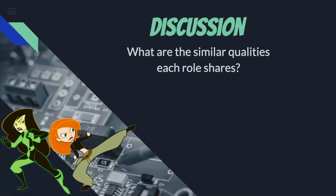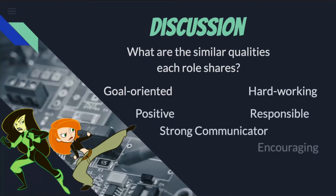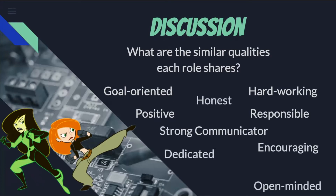In having discussions and gathering thoughts from graduate assistants and other students at Ball State University, I'm going to discuss what are some of the similar qualities that an advisor and a great student leader share. Look at your list and see what things compare or overlap between the two. Many of the things on the screen are things that were said and shared that each role shares: goal-oriented, positive, hardworking, responsible, honest, strong communicator, dedicated, encouraging, open-minded, and knowledgeable.